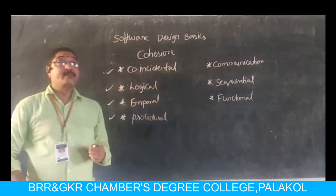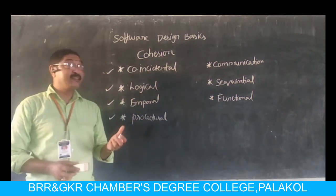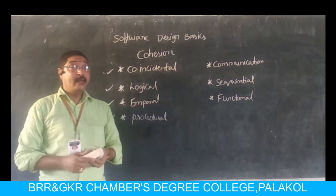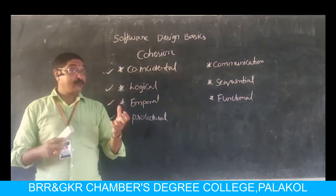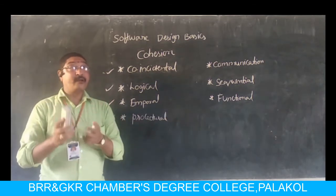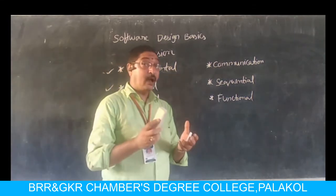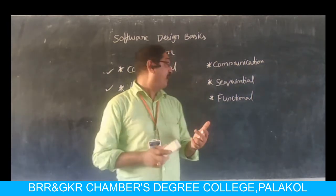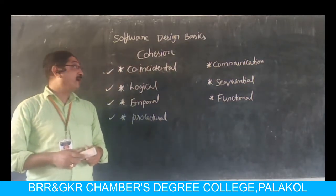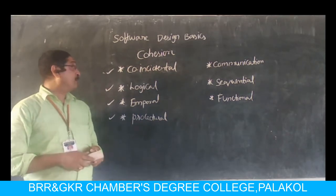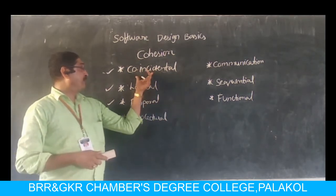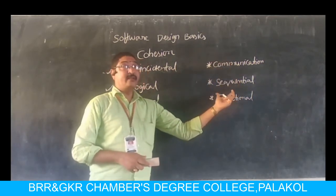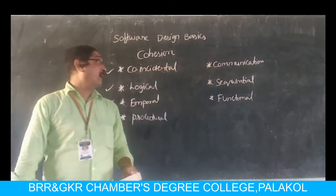The last type is functional cohesion, which is the most highly expected model. In functional cohesion, all elements are put together and all elements work to contribute to a particular function. All elements of this cohesion work for a particular function — then it is called functional cohesion. The types of cohesion are: coincidental, logical, temporal, procedural, communication, sequential, and functional cohesion.